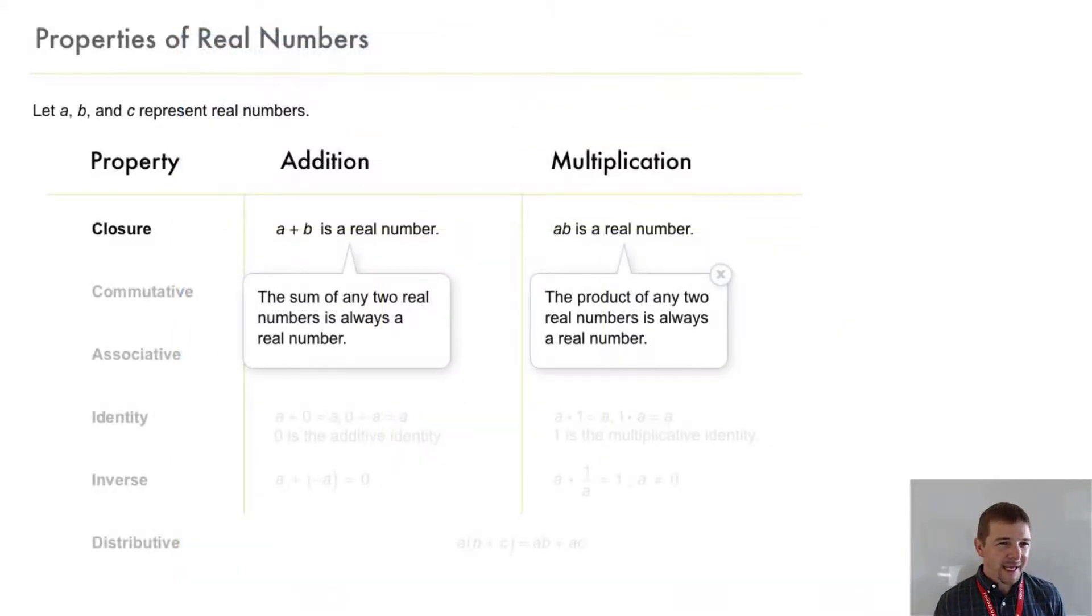Closure means that if you add numbers from within the same set or subset of the real numbers, their sum will also be in that same set. So since we're talking about real numbers, the closure property of addition says that a plus b will be a real number. The closure property of multiplication says similarly that a times b is a real number.